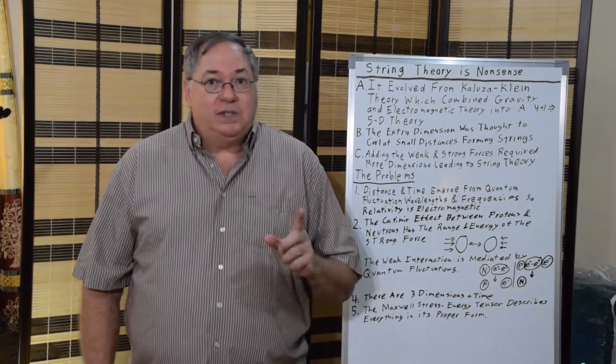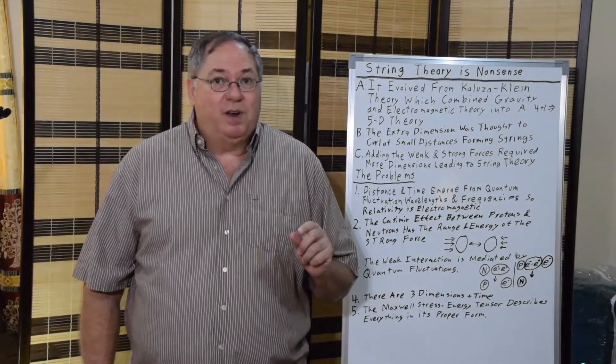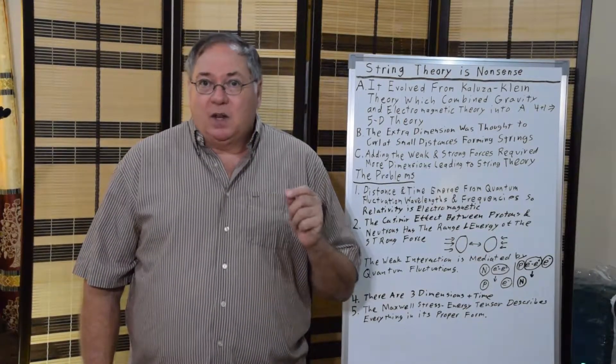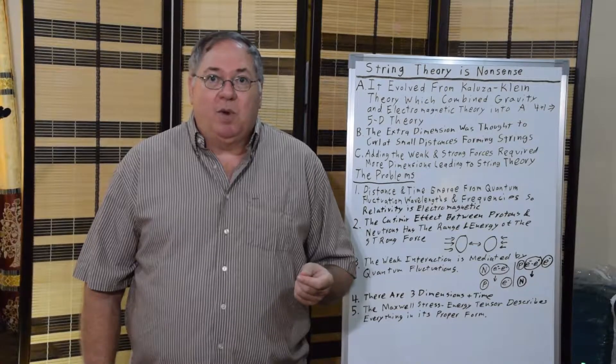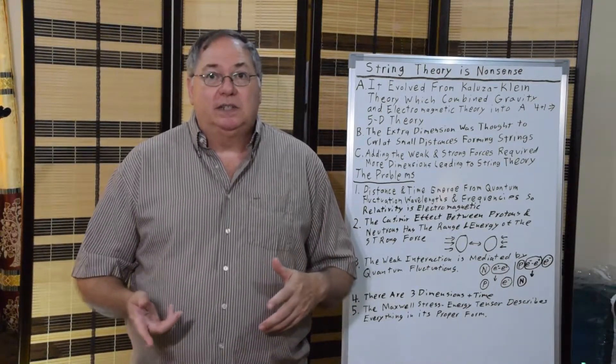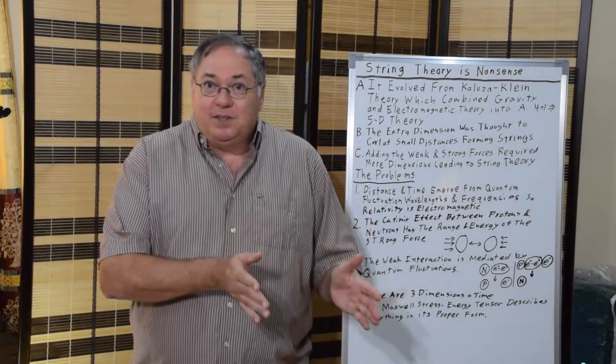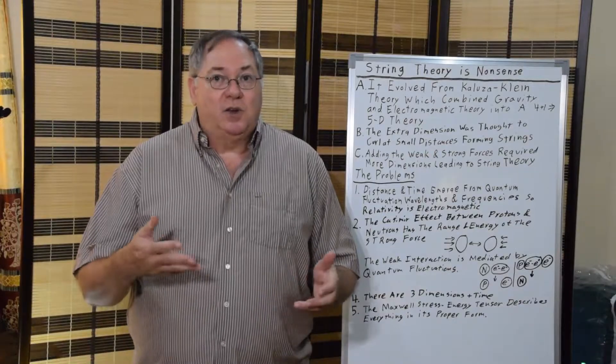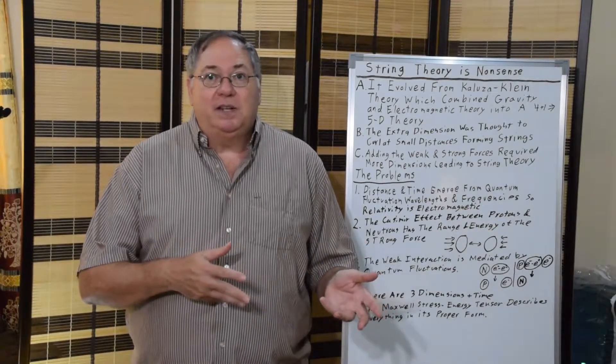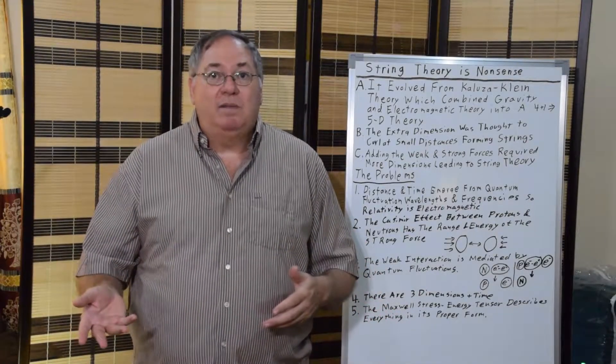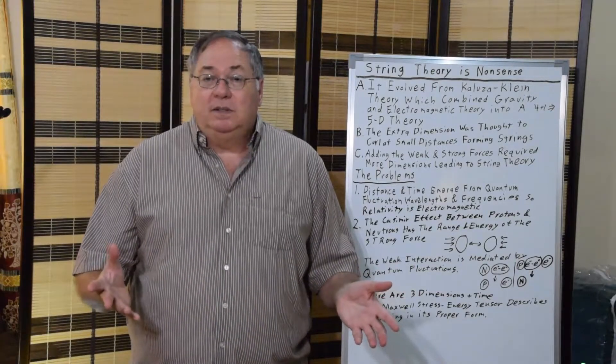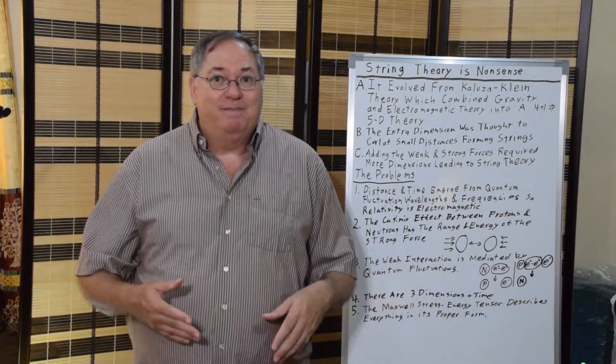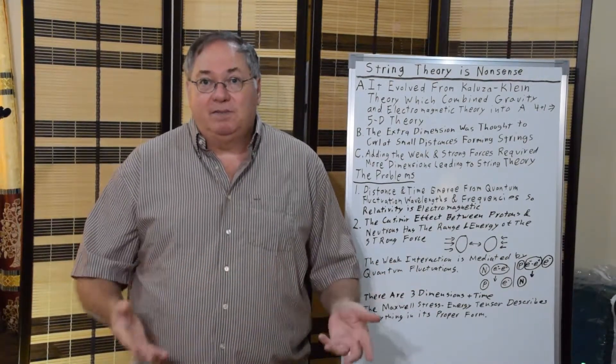Well, the number one suspect for where they emerge from is quantum field theory, not from space. And quantum fluctuations that make up the quantum fields have wavelengths and frequencies. Wavelengths mean physical dimensions. Frequencies mean time. Frequencies are cycles per second. So, you have to have time and dimensions in order to have quantum fluctuations.